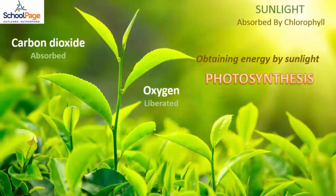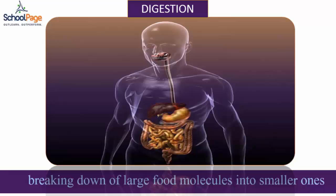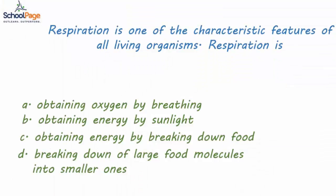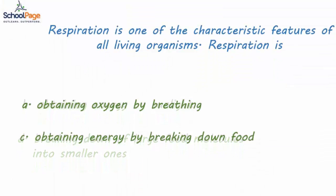We know that obtaining energy by sunlight is photosynthesis, and breaking down of large food molecules into smaller ones is digestion. Hence, eliminating the wrong options, we are left with Option A and Option C.